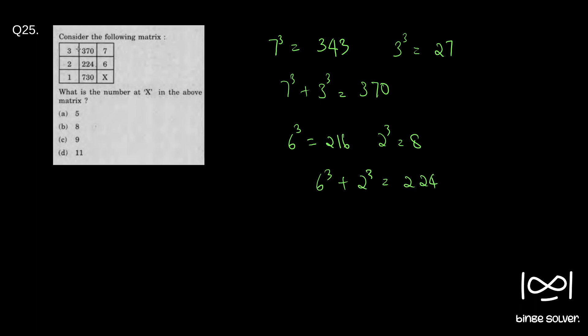So it is the relationship. So we should get x cube plus 1 cube is equal to 730.